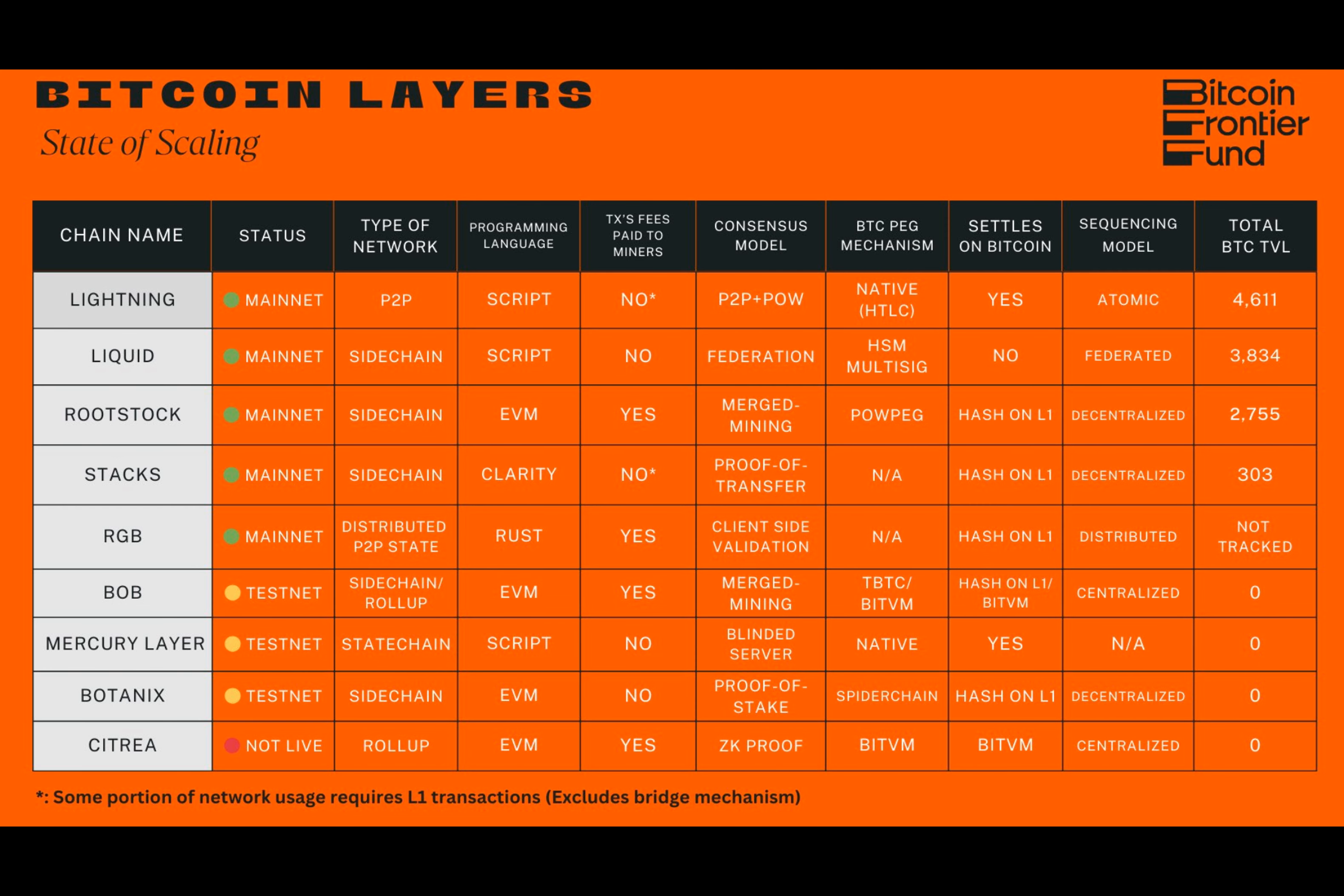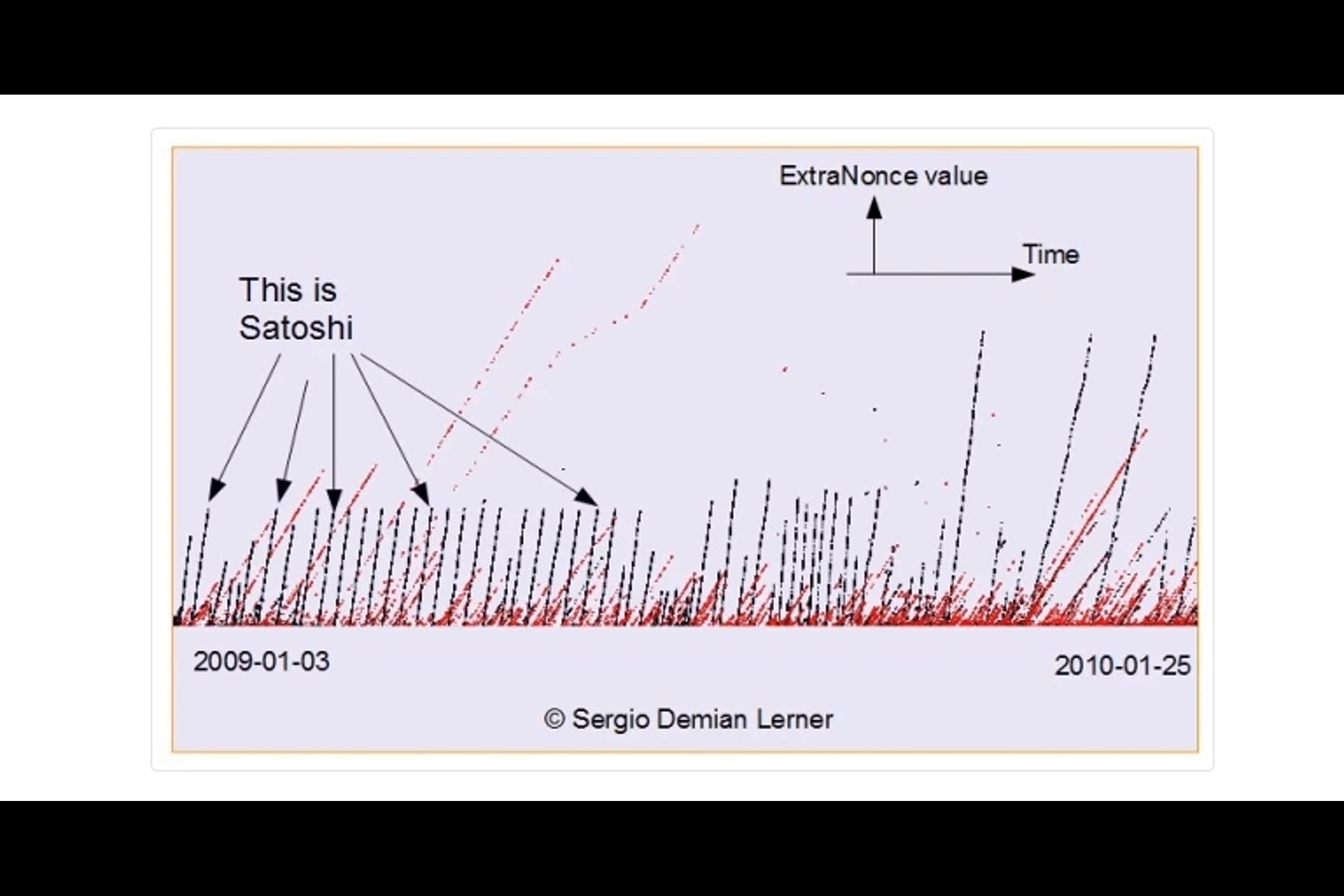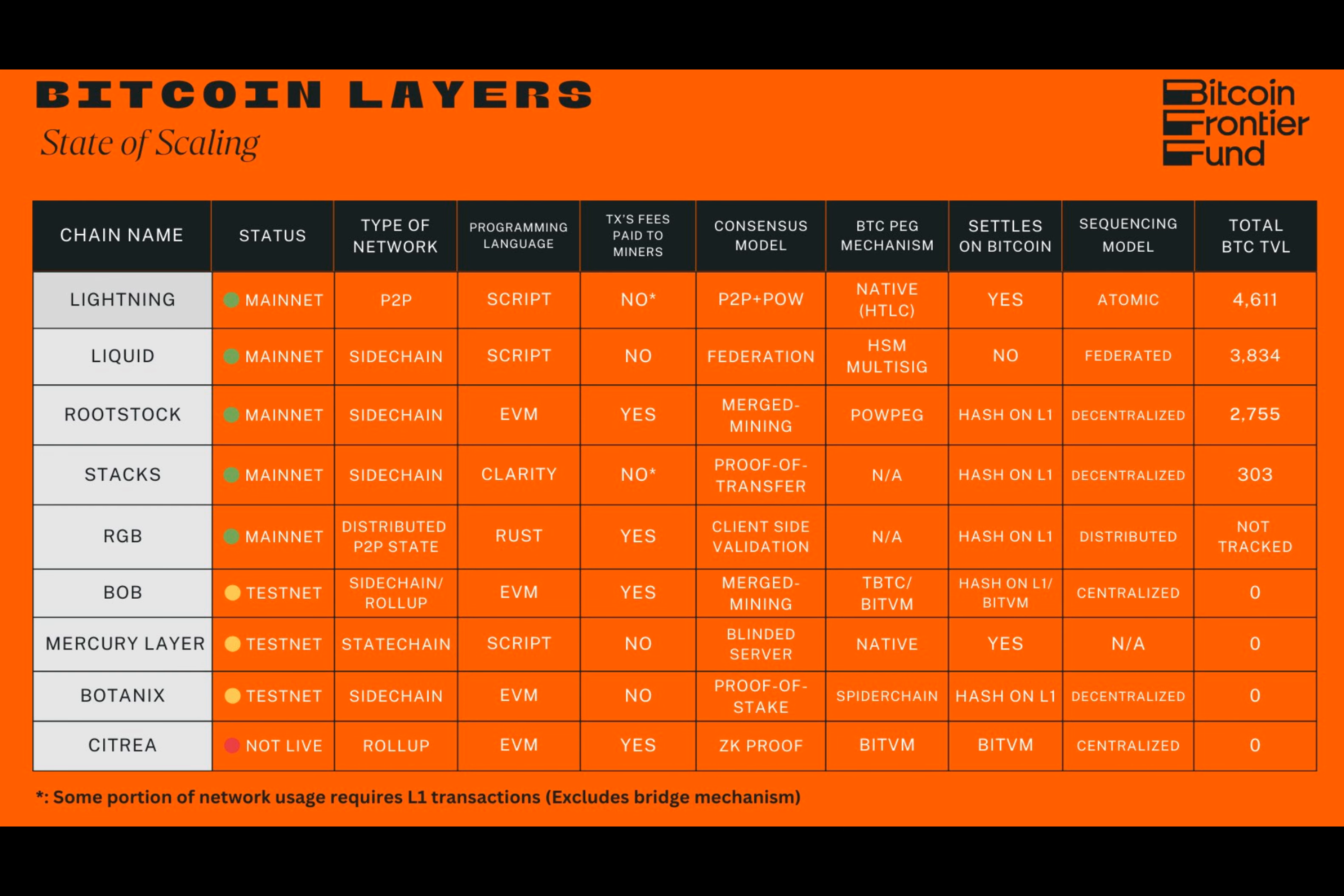Instead, BitVMX touts a streamlined approach by executing central processing unit instructions directly using Bitcoin script opcodes. Lerner says this makes it better suited for real-world applications and unlocks use cases such as running sidechain-like clients and verifying using ZK-SNARKs.